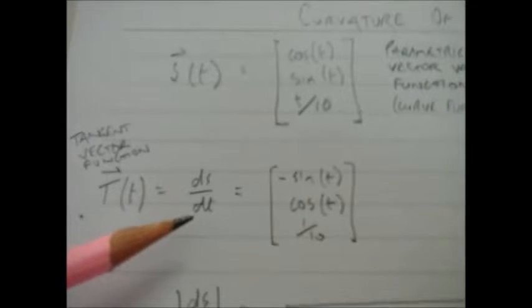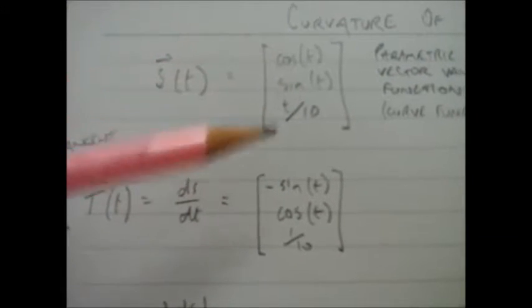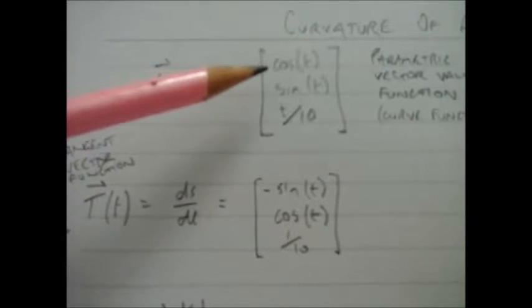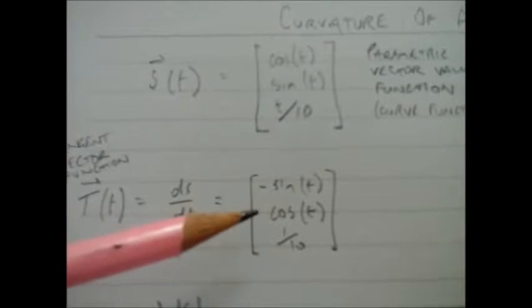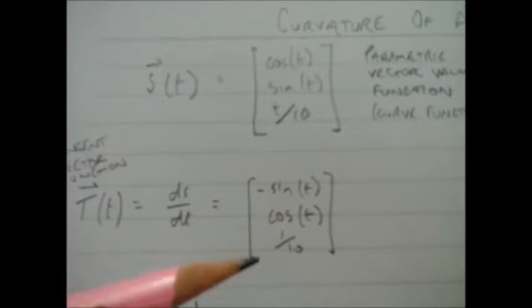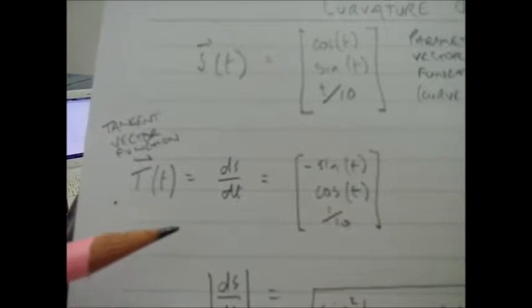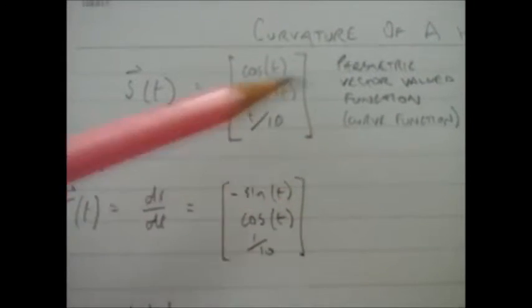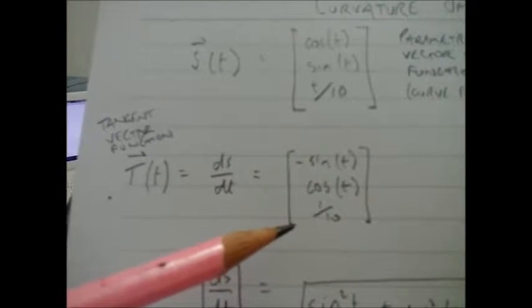I've got to differentiate each part of this vector, the x, y, and z positions. If I differentiate cos(t), minus sin(t), sin(t) differentiates to cos(t), t over 10 differentiates to 1 over 10. That is now my tangent vector function. It's still a parametric vector-valued function, but now this one represents the tangent at any point on the curve.